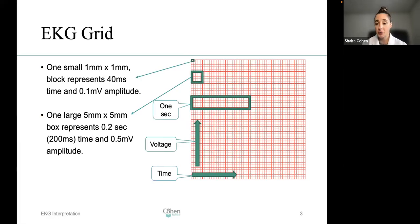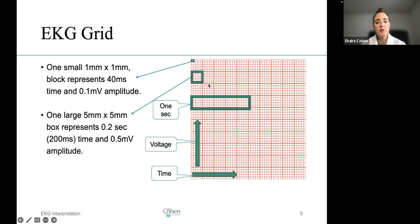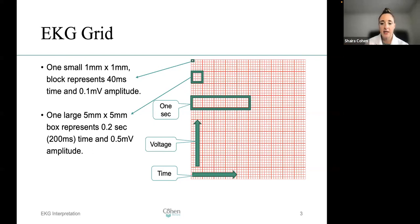When reading a strip, it's important to understand what the red boxes on the background mean, because that's what we use to measure. One small box represents 40 milliseconds. Then you have larger boxes — one large box of 5mm by 5mm represents 0.2 seconds. Anything going up is the voltage. Anything going across is time. So: how strong, for how long.